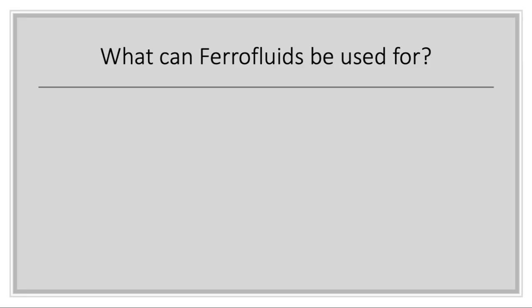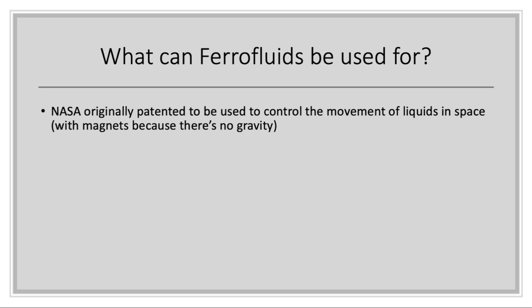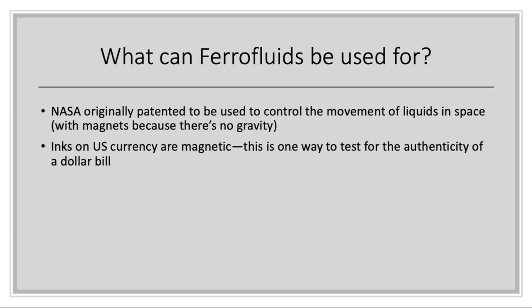What can they be used for? Well, NASA originally patented this idea to control the movement of liquids in space. Because there's no gravity to control the movement of liquids, they could use magnetic fields to direct liquids throughout systems in space shuttles. And also, inks on U.S. currency are magnetic. This is one way to test for the authenticity of a dollar bill.